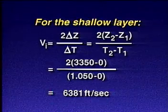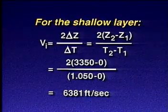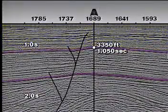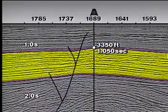That's the same value as the average velocity. True. For the layer along the surface, the average velocity equals the interval velocity. But this is not true for the deeper layer.